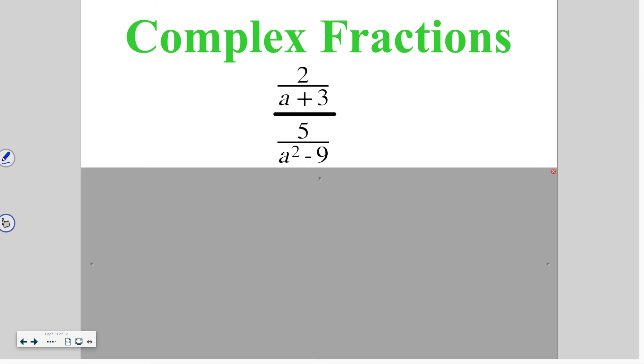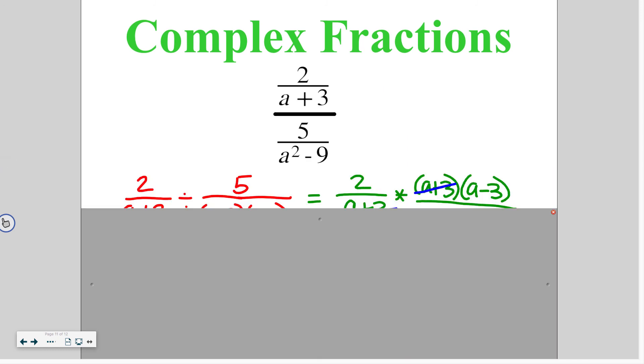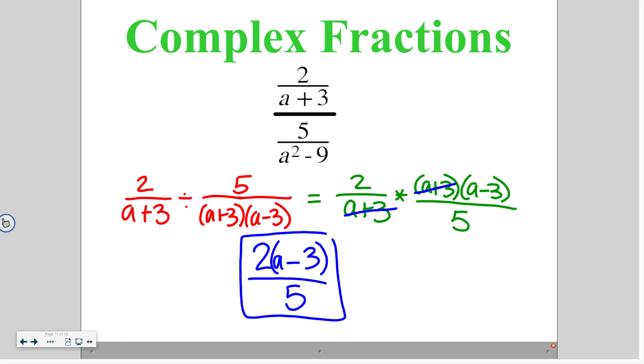Go ahead and try this one on your own. Keeping the first, there's nothing to factor. As you change and flip, you can factor a squared minus 9 to a plus 3 and a minus 3. The a plus 3's cancel out and you end up with 2 times a minus 3 over 5. Or if you wanted to simplify that, you could say 2a minus 6 over 5.